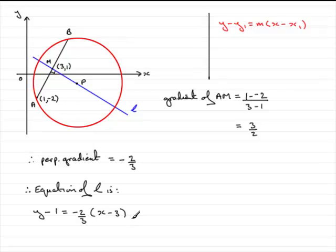Now essentially it said find an equation for the line L, so essentially that's it done. You can leave it like that and it will be fine. However, you might want to put it into various forms.